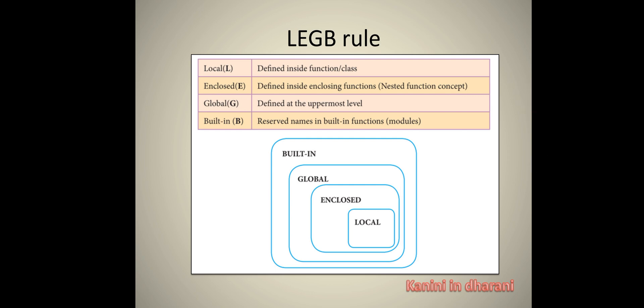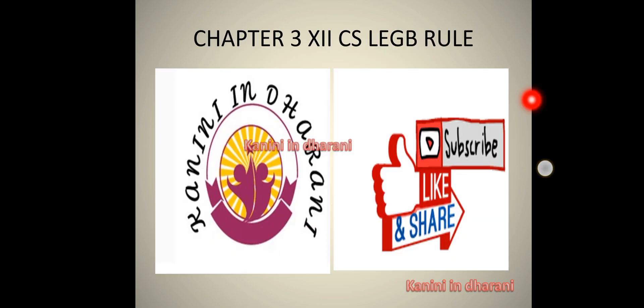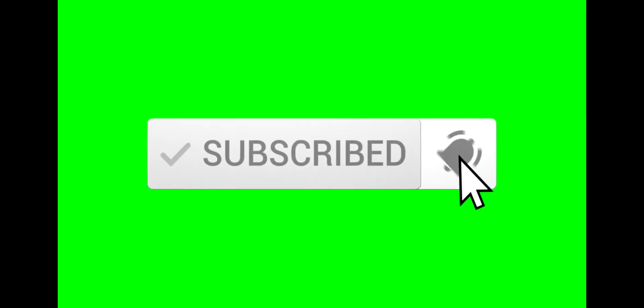The scope is worth 2 marks, namespace is 2 marks, variable is 2 or 3 marks, and the LEGB Rule is 3 or 5 marks. Comment and share. Thanks for watching. Bye.